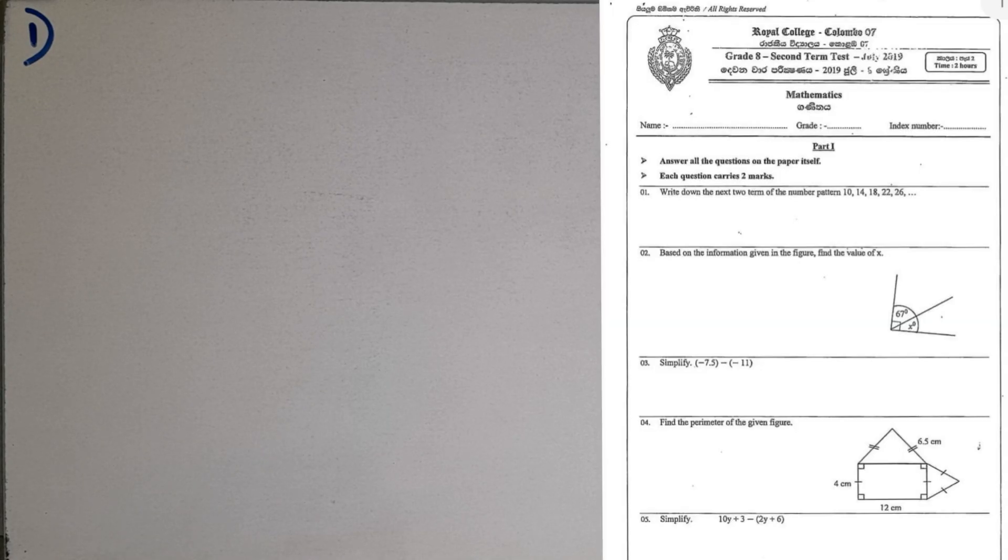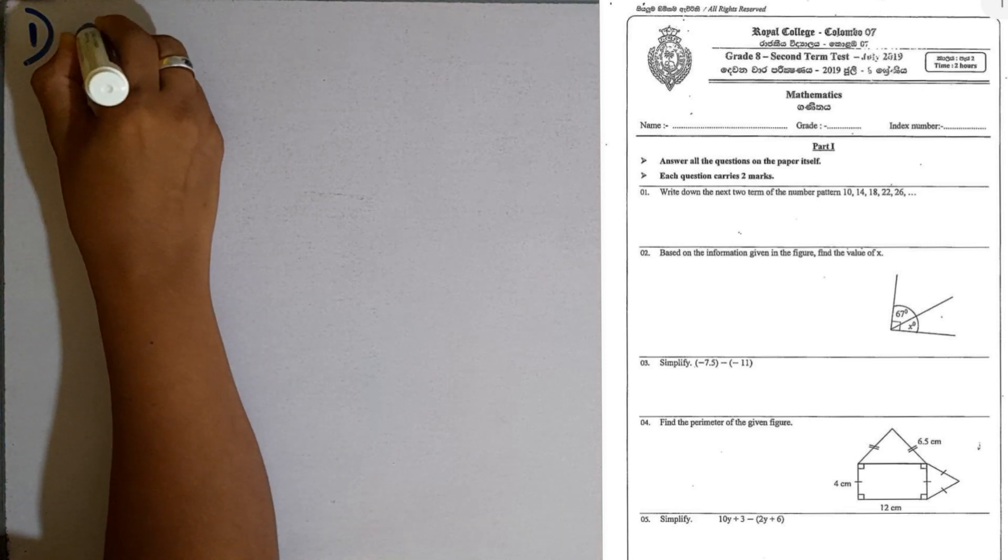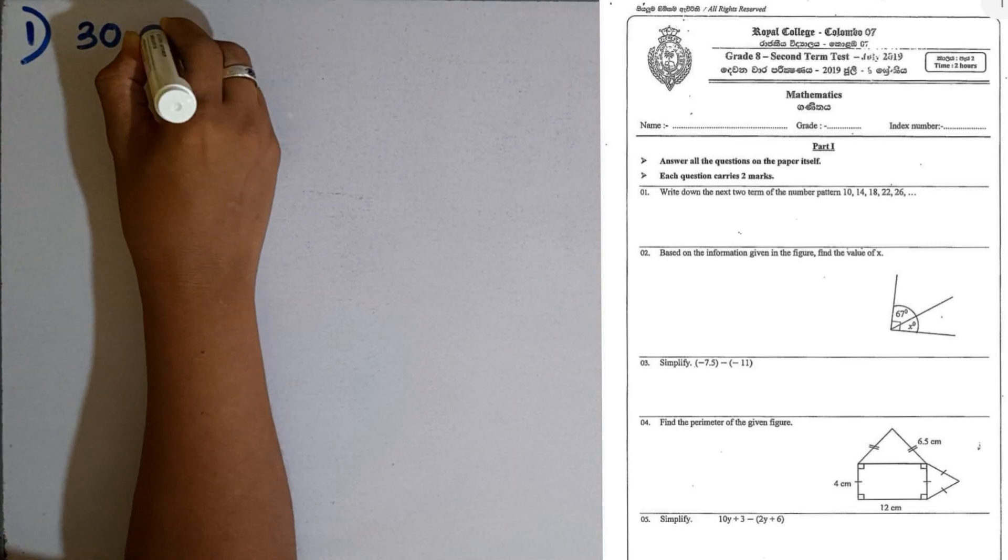Question number 1. Write the next two terms of the number pattern: 10, 14, 18, 22, 26. What is the difference between each two consecutive terms here? 10 plus 4 is 14. The difference is 4. So to find the next two terms, we have to add 4 to the last term. 26 plus 4 is 30. Then 30 plus 4 is 34.